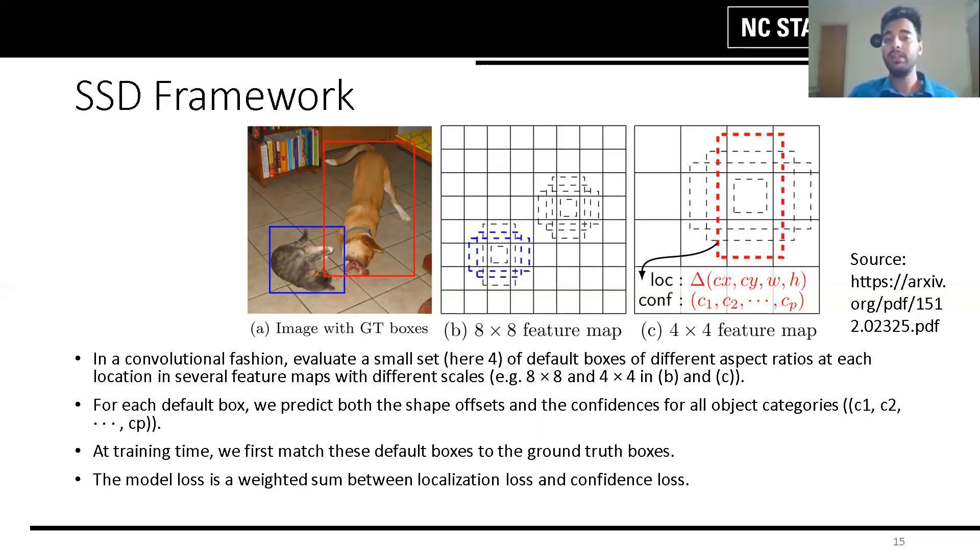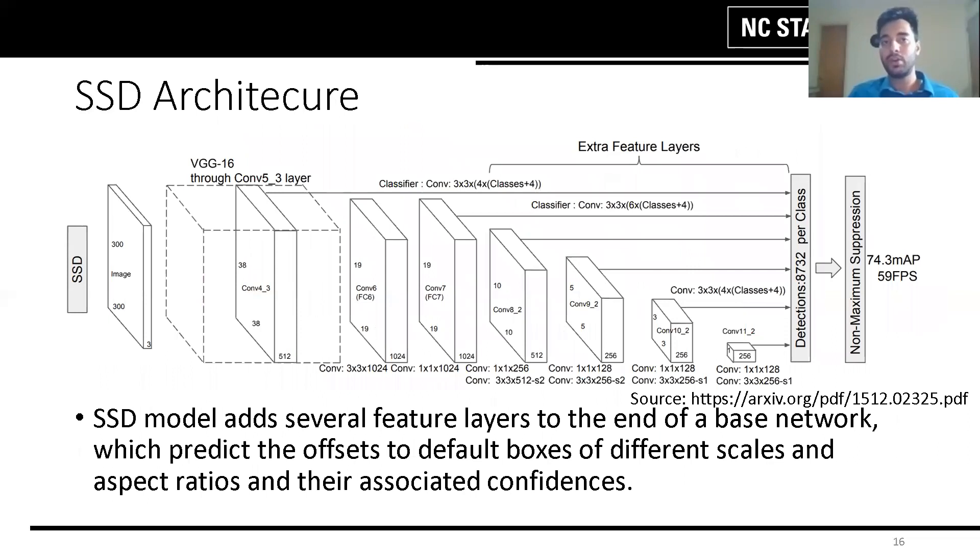At training time, the network will make predictions generating scores for the presence of each object category in each of the default boxes and tries to match each ground truth box to the default box. Also for objects of various sizes in an image, the network combines predictions from multiple feature maps with different resolutions.